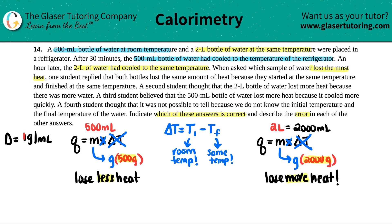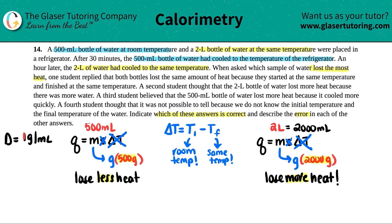Let's see which of these answers are correct. The first student replied that both bottles lost the same amount of heat because they started and finished at the same temperature. We already discussed that this is incorrect. The error is that the student focused only on delta T, which is the same for both — but one had a greater mass, so that's why this student is incorrect.